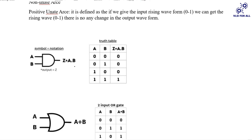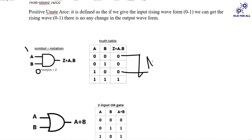Consider B is constant at 0, and A is the variable. First give A = 0, so we have 0, 0, output is 0. Then A changes to 1: inputs are 1, 0, output is 0. There is no change in the output.